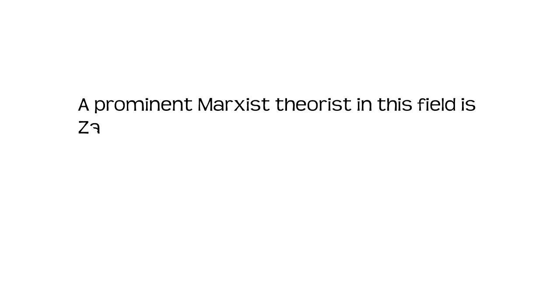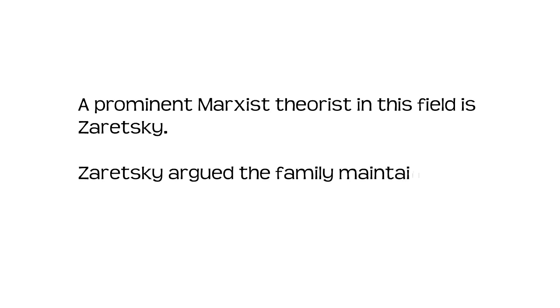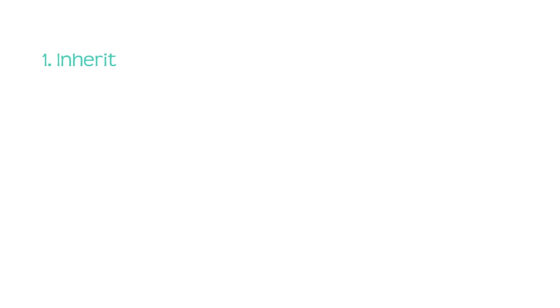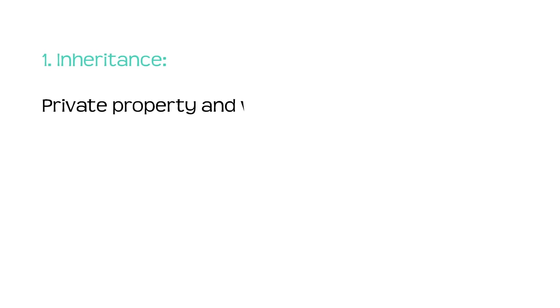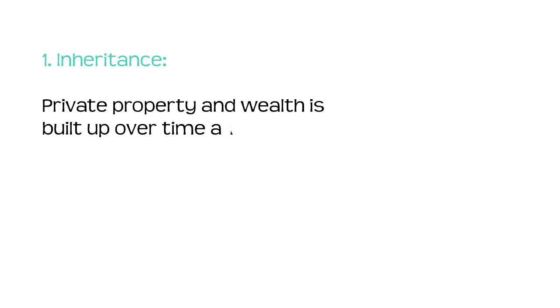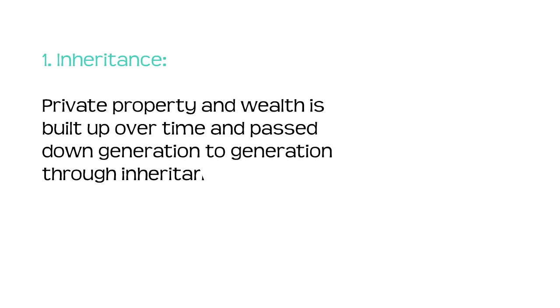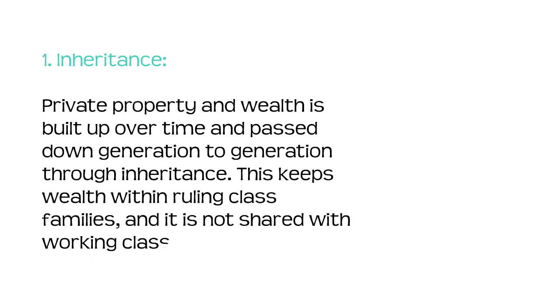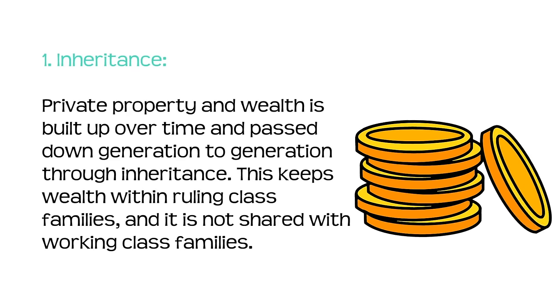A prominent Marxist theorist in this field is Zaretsky. Zaretsky argued the family maintains capitalism in four ways. Firstly, inheritance: private property and wealth is built up over time and passed down generation to generation through inheritance. This keeps wealth within ruling class families and is not shared with working class families.